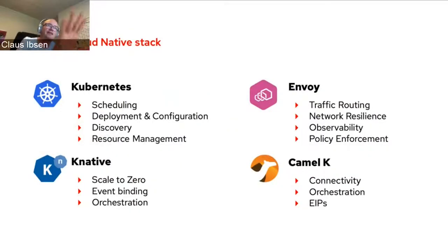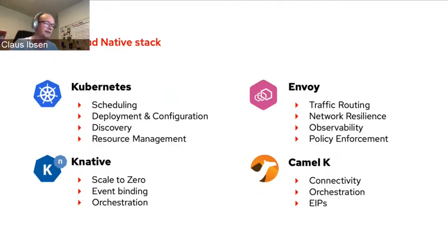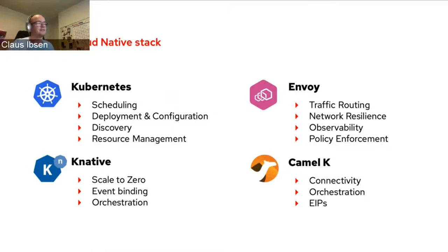The key players in that stack are Kubernetes, KNative, and for reliable networking, Envoy and something like a service mesh — different implementations like Istio. You can also get all of that out of the box with OpenShift. At the bottom we have Camel K for lightweight connectivity and connectors.